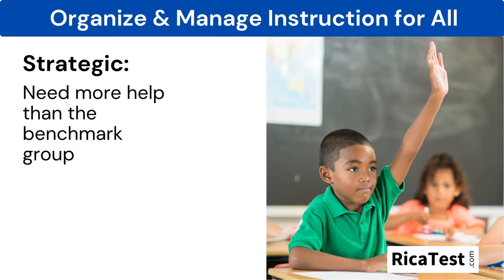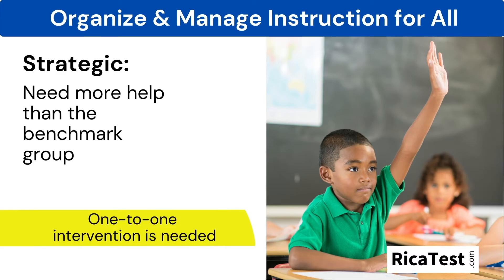Students placed into the strategic category need more help than the benchmark group. These children are often more than a year behind their peers, but not more than two years behind. Reteaching grade-level standards won't work for these students, as the need for intervention goes back even further. Additional resources should be used, and if available, a teacher's assistant or helper should work one-to-one with these students to work towards meeting and reaching the students' needs and goals.